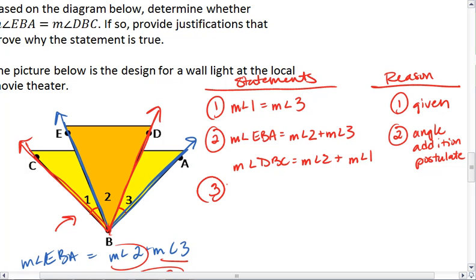Since measure of angle 1 equals the measure of angle 3, then I can say that the measure of angle DBC actually equals the measure of angle 2 plus the measure of angle 3. And that was because I substituted the measure of angle 3 in for the measure of angle 1.